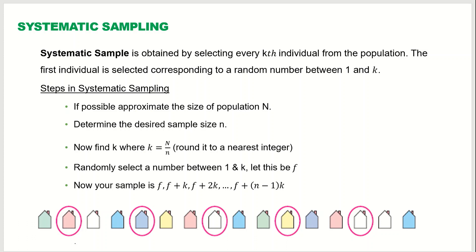The third sampling technique is systematic sampling. A systematic sample is obtained by selecting every kth individual from the population; the first individual is selected at a random number between 1 and k. For example, if we approximately know the population size as uppercase N and our desired sample size as lowercase n, we divide N by n, round to the nearest integer, and that value is k.